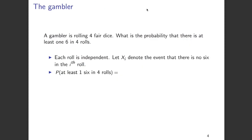Let's understand this using an example. A gambler is rolling four fair dice. We are interested in the probability that there is at least one six in one of these four rolls. Since the four dice are fair, each roll is independent of the other. Let Xi denote the event that there is no six in the i-th roll. What we are trying to find is the probability that we get at least one six in four rolls.